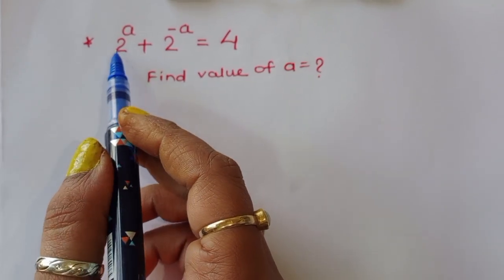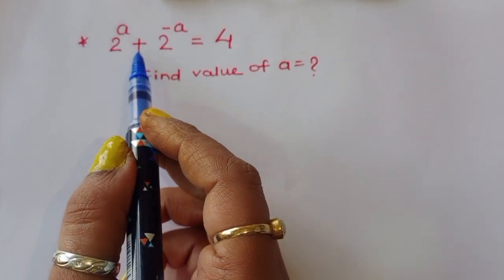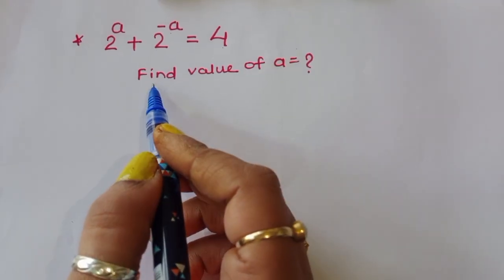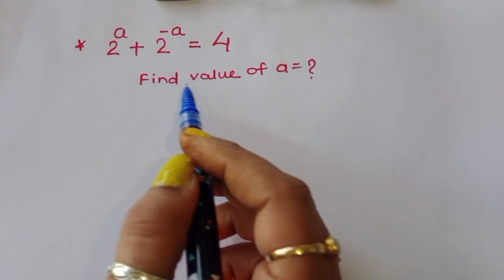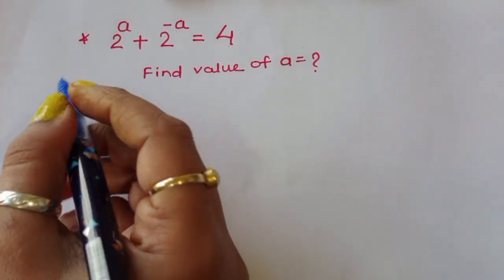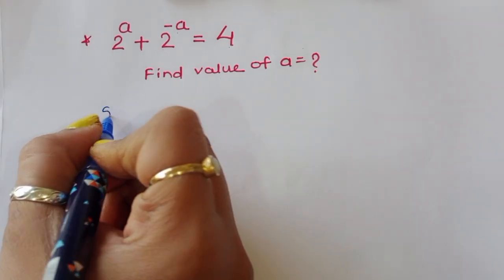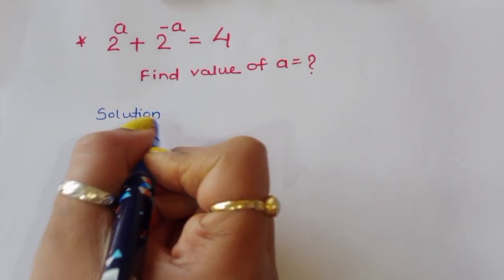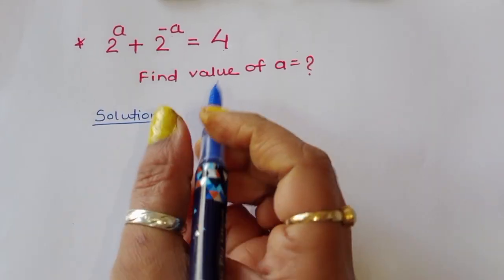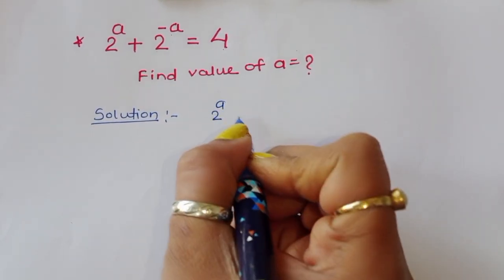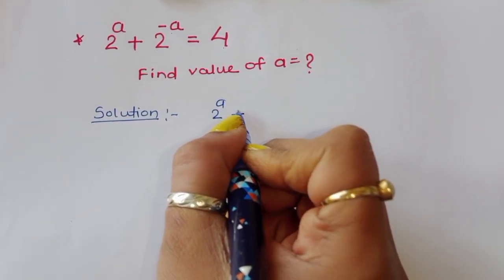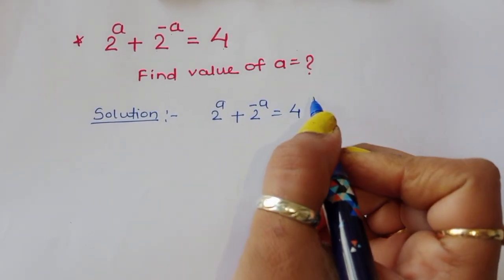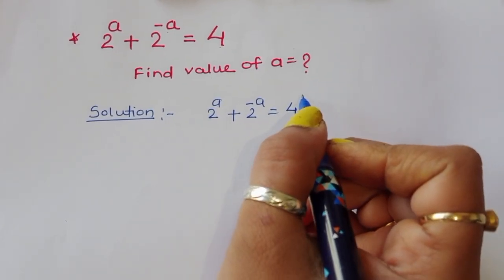The question is: given 2^a + 2^(-a) = 4, we have to find out the value of a. Let's look at the solution.